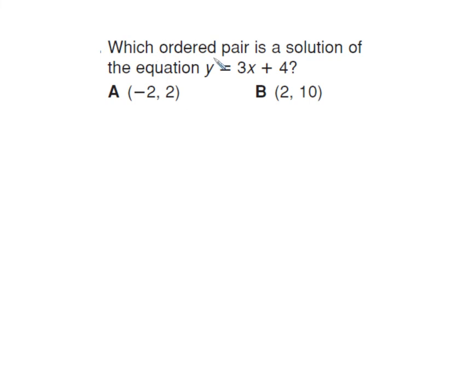Which ordered pair is a solution for Y equals 3X plus 4? We'll just try them. So this is X. This is Y. Just plug them in. 3 times 2 is 6. I'm sorry. So this is the X. Be real careful. 3 times negative 2 is negative 6. Negative 6 plus 4 equals negative 2. So this one works.